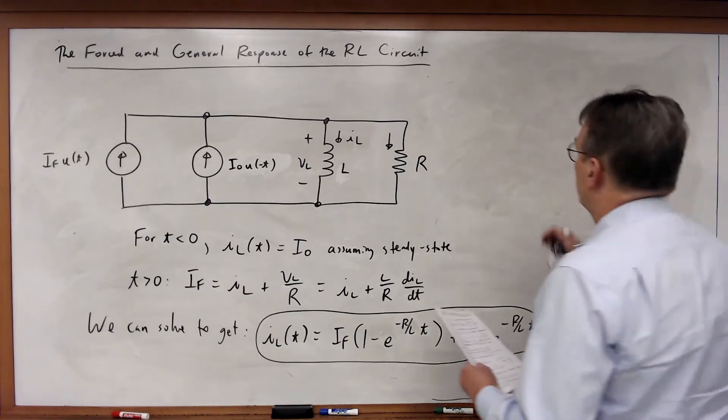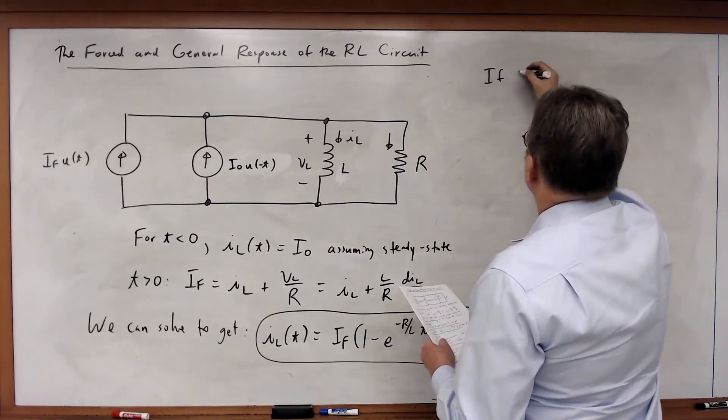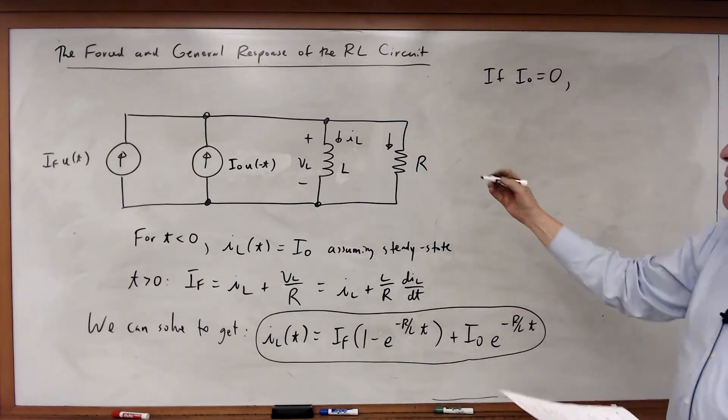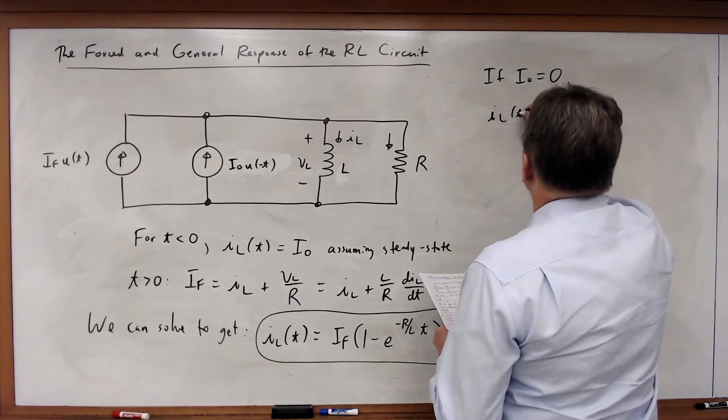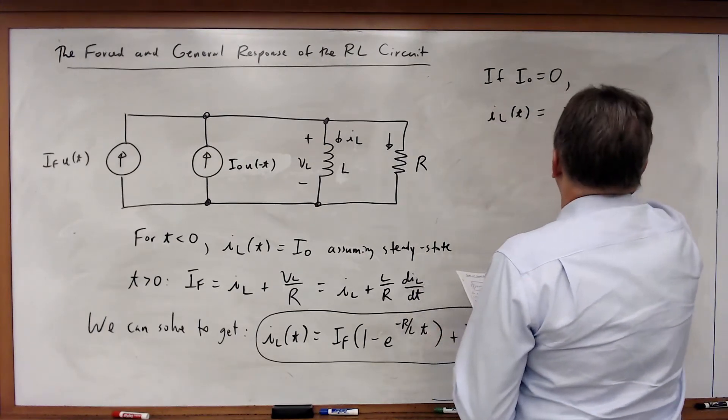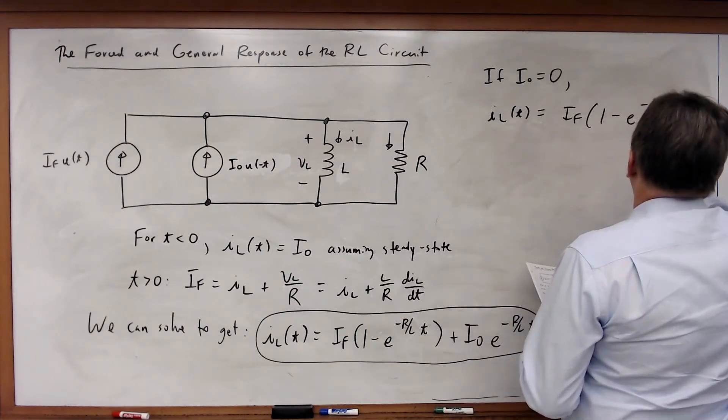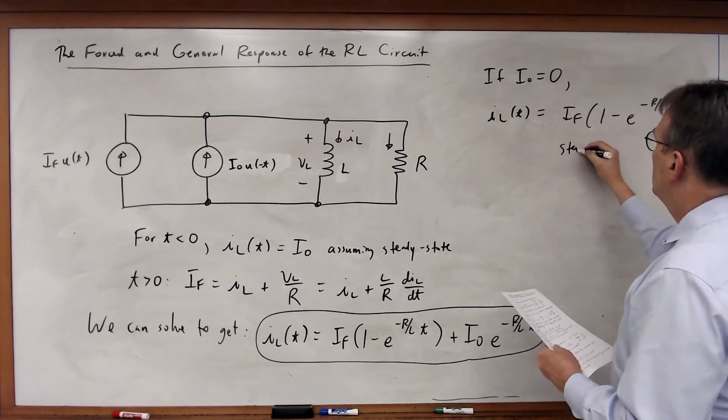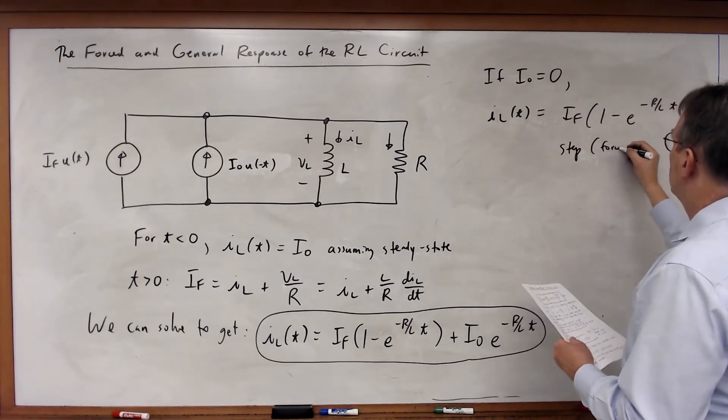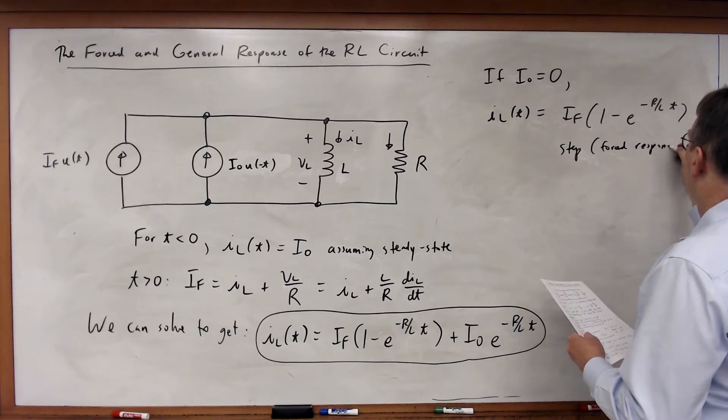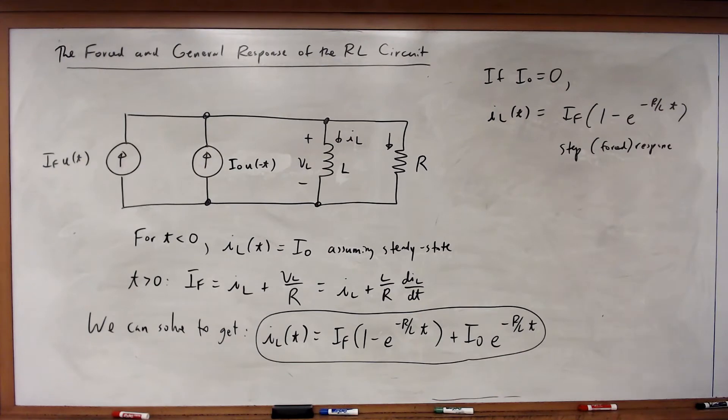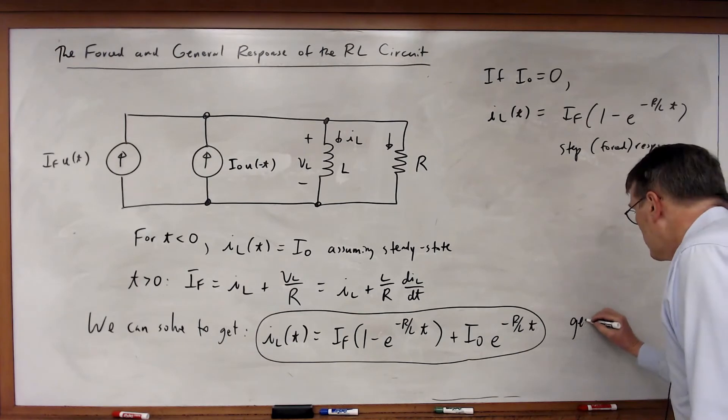And we note, if I0 is equal to 0, in other words, if we have a 0 initial condition, then IL of t would just be equal to IF times 1 minus E to the minus R over L times t. And we would just have the step or forced response. So the same kind of behavior we saw before, but if we have a non-zero initial condition, then we have the general response.